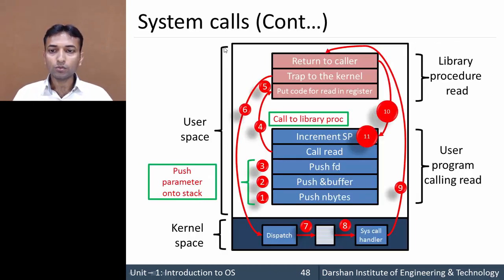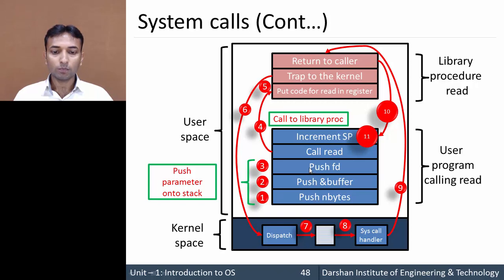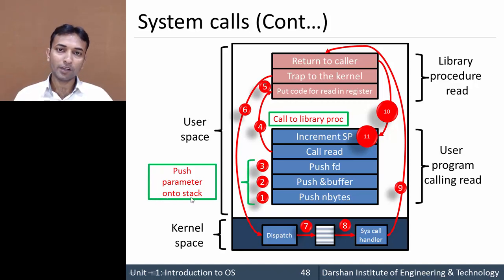Now let us see how the read system call is executed in our system, step by step. Here steps 1, 2, and 3: the calling program will first push parameters onto the stack — push fd (the file descriptor), push the buffer, push nbytes. File descriptor and nbytes are called by value, and the buffer is called by reference. So in the first three steps, the calling process simply pushes the parameters onto the stack.